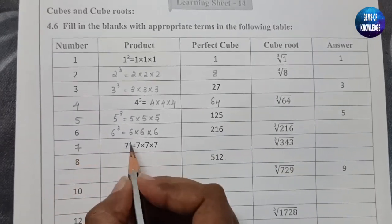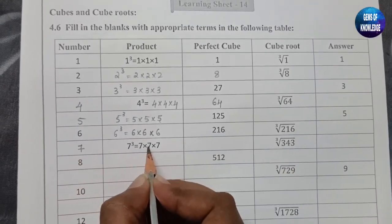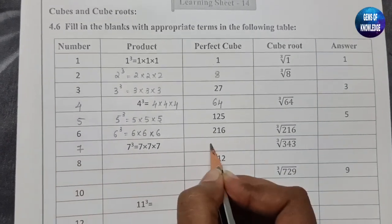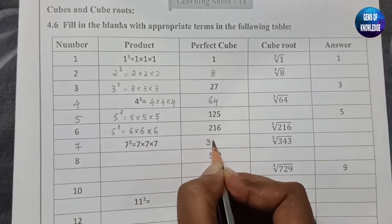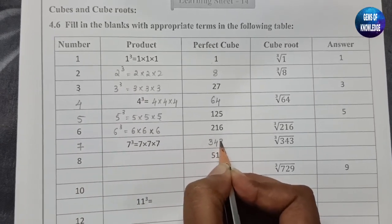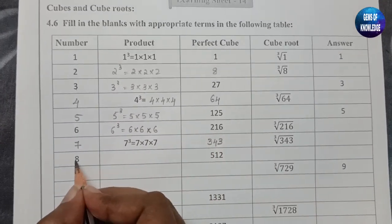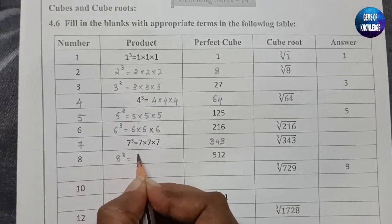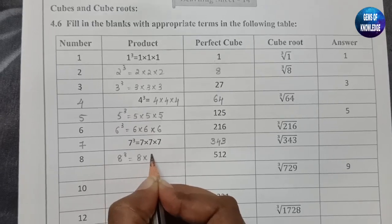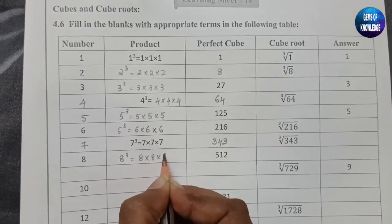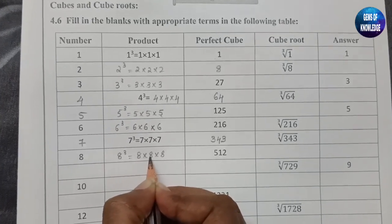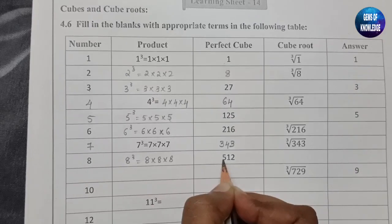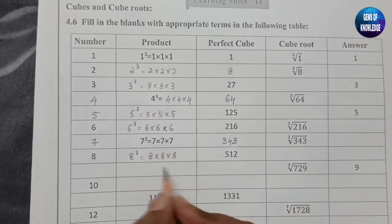Seven cube: seven sevens are 49, and 49 into seven is 343. Eight cube equals eight into eight into eight — eight eights are 64, and 64 into eight is 512.